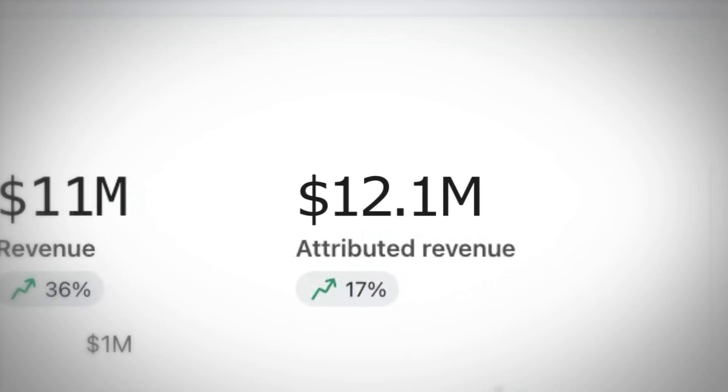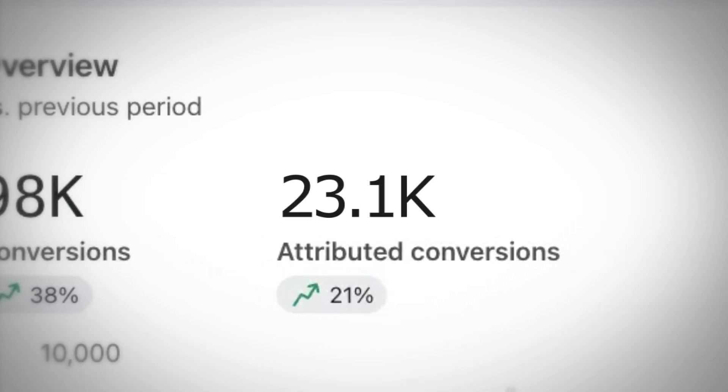A big mistake I see in abandoned cart and checkout emails is showcasing other products or collections. This is a problem because you don't want people going back up the funnel — you only want them moving down towards completing their purchase. For flows like active on-site or browse abandonment, showcasing other products makes sense. But for these two flows, which are the closest to the actual conversion, you want to remove all distracting CTAs and keep the focus on getting them to finish their purchase.